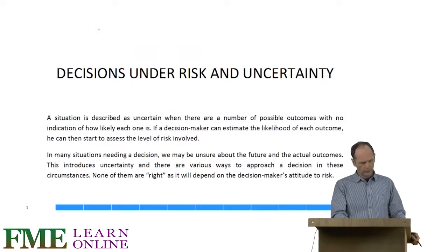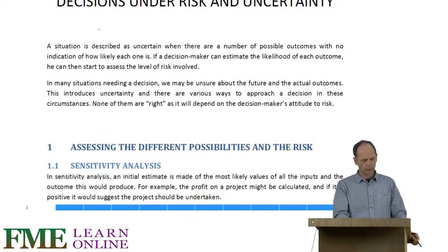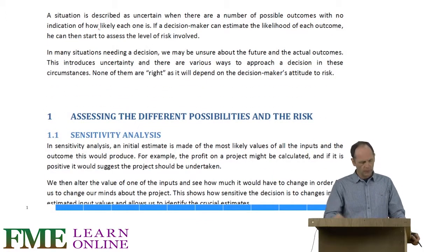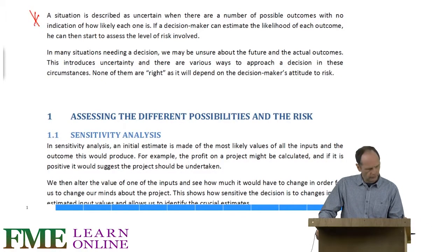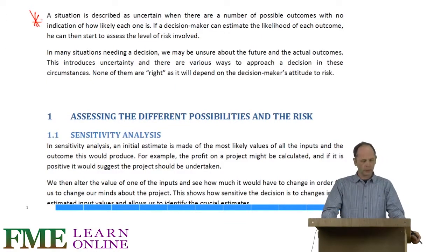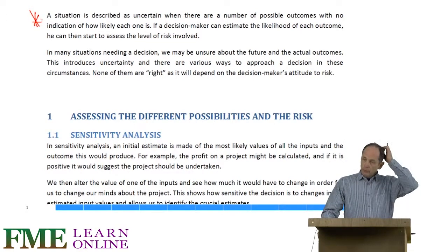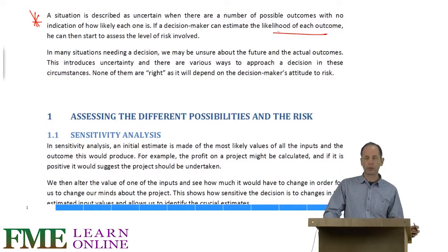Risk and uncertainty. How does the syllabus describe the difference between risk and uncertainty? If we have an uncertain situation where there are various outcomes and we don't know how likely each one is, then this is called uncertainty. Whereas risk is when we do have some idea of how likely each outcome might be, and then we can start to assess the level of risk involved.